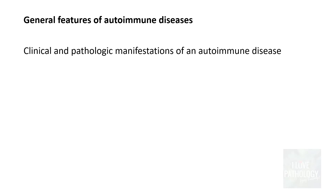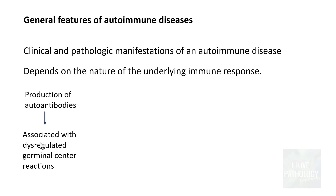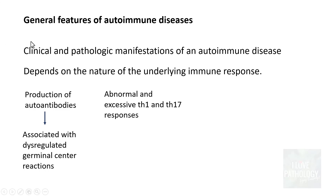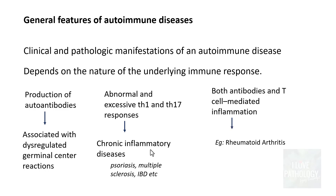The clinical and pathological manifestations depend on the nature of the underlying immune response. If it is purely autoantibody production, this is associated with dysregulated germinal center reactions producing large quantities of autoantibodies. If it involves abnormal and excessive T helper 1 and T helper 17 responses, it leads to chronic inflammatory diseases like psoriasis, multiple sclerosis, and inflammatory bowel disease. Sometimes both autoantibodies and T cell-mediated inflammation occur together — for example, in rheumatoid arthritis.